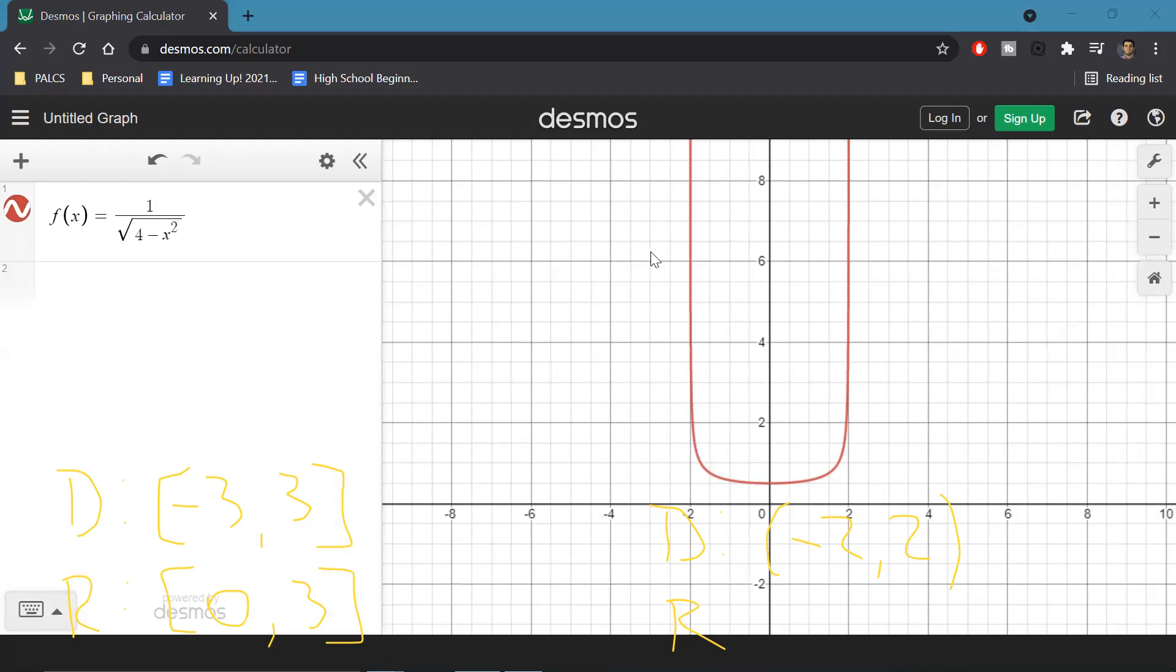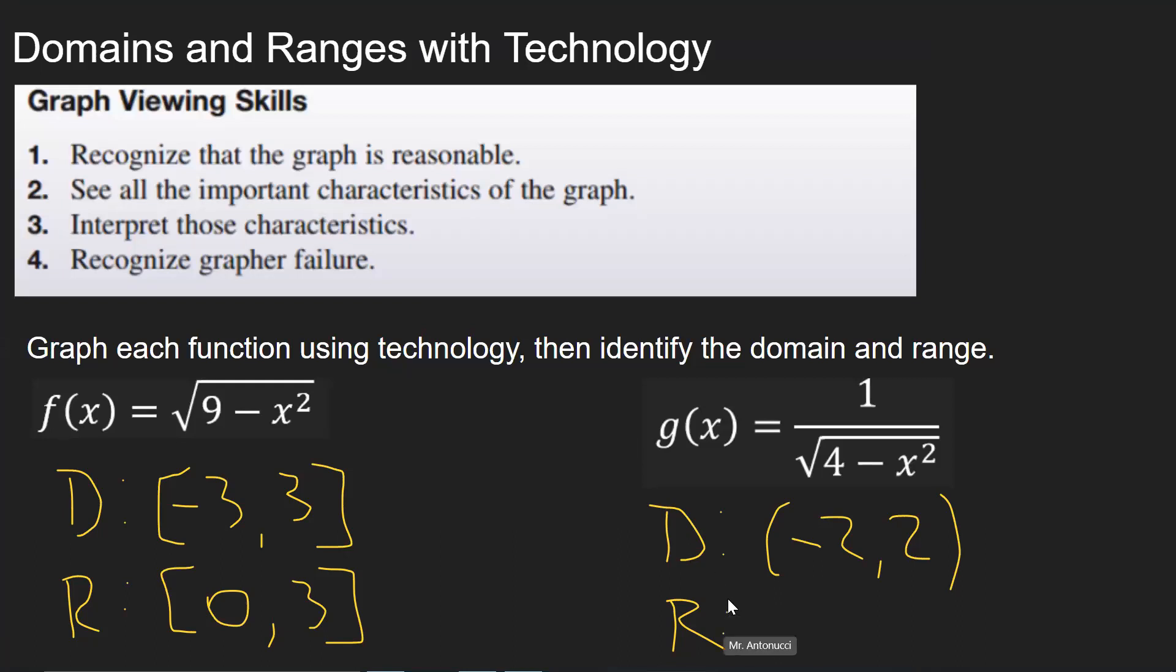which means that the y values continue to go on forever. The closer you get to two or negative two on the x-axis. That means that our range is going to be from negative infinity to infinity.